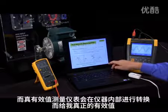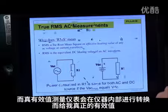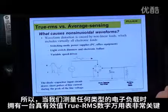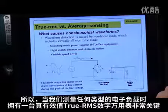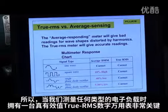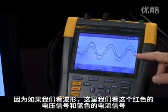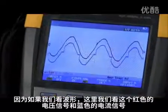A true RMS meter actually does this conversion inside the meter and gives us the true RMS reading. So when we're working with any type of electronic load, it's important to have a true RMS meter. If we look over at the oscilloscope, here I'm showing the voltage signal in red and the current signal in blue.